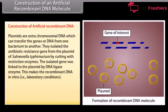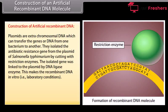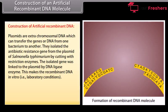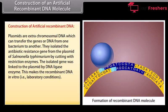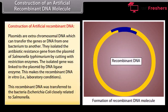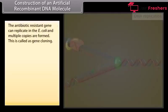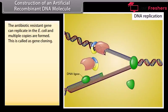Construction of artificial recombinant DNA. Plasmids are extra-chromosomal DNA which can transfer the genes or DNA from one bacterium to another. They isolate the antibiotic resistance gene from the plasmid of Salmonella typhimurium by cutting with restriction enzymes. The isolated gene was linked to the plasmid by DNA ligase enzyme. This makes the recombinant DNA in vitro, that is, under laboratory conditions. This recombinant DNA was transferred to the bacteria Escherichia coli, closely related to Salmonella. The antibiotic resistance gene can replicate in E. coli and multiple copies are formed. This is called gene cloning.